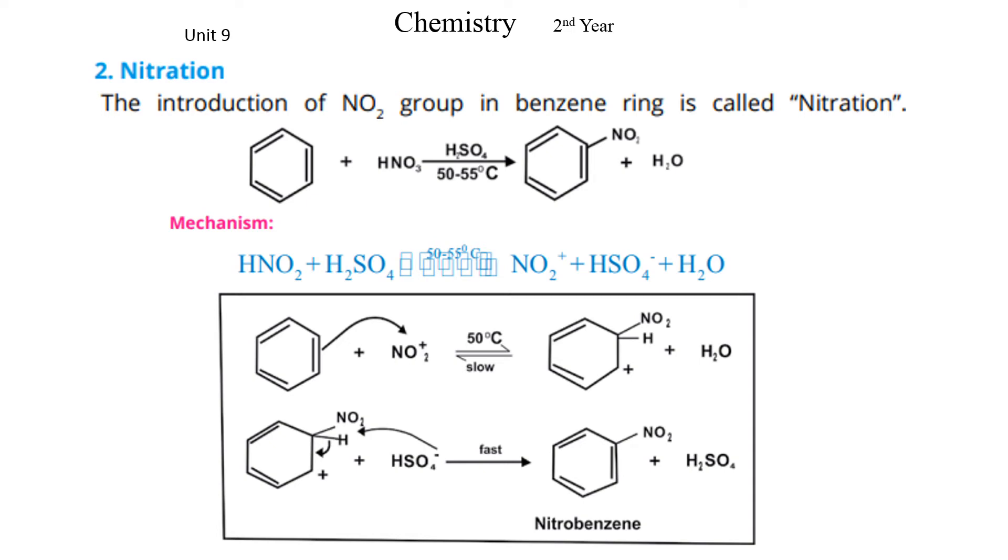Bismillahirrahmanirrahim, our next topic is nitration of benzene. The introduction of nitro group NO2 group in benzene ring is called nitration. For example, benzene plus HNO3 and H2SO4 as catalyst at 52-55 degrees Celsius. And we get nitrobenzene. The benzene's hydrogen is replaced by NO2. The hydrogen from benzene and one H and one O from HNO3 combine to form H2O.